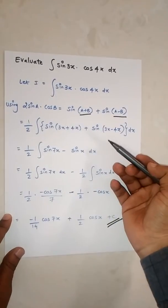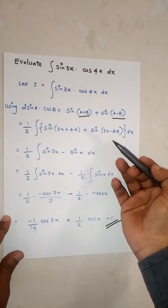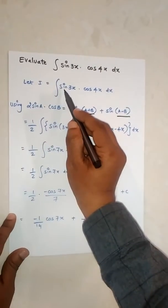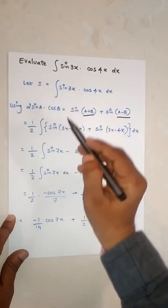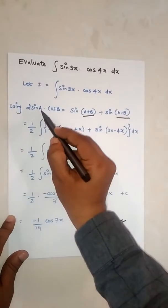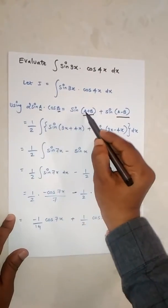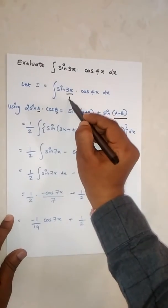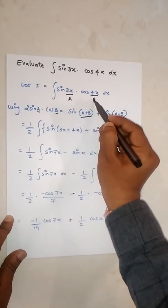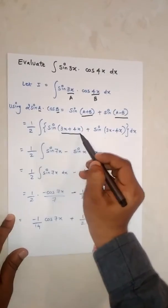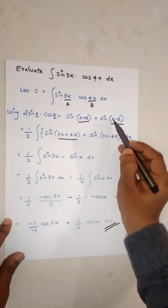In this question it will get replaced by sine a and b. It is a plus b, so 3x plus 4x, and sine a minus b, which is 3x minus 4x.